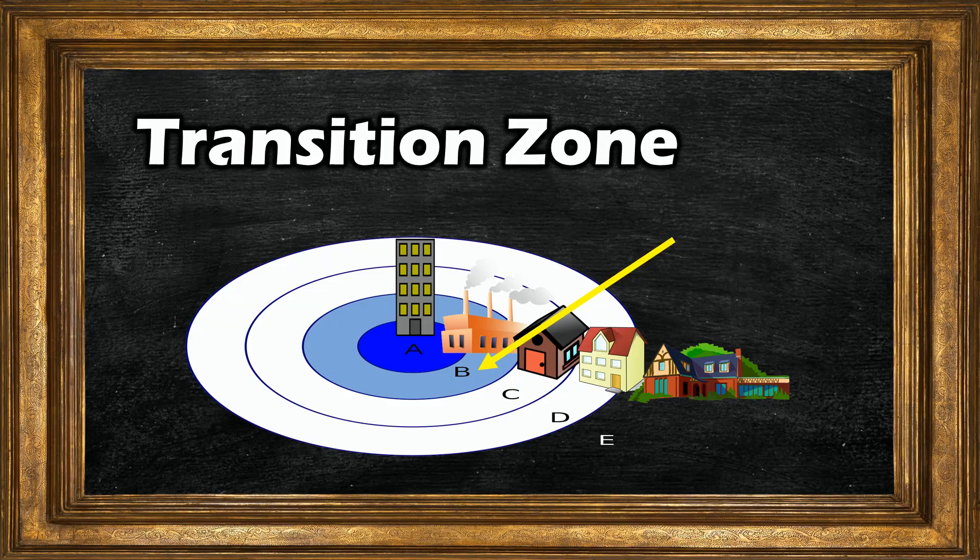So, people who lived around the city center were the working class, and they made up the second ring of Burgess's concentric ring model. The model refers to this as a transition zone.